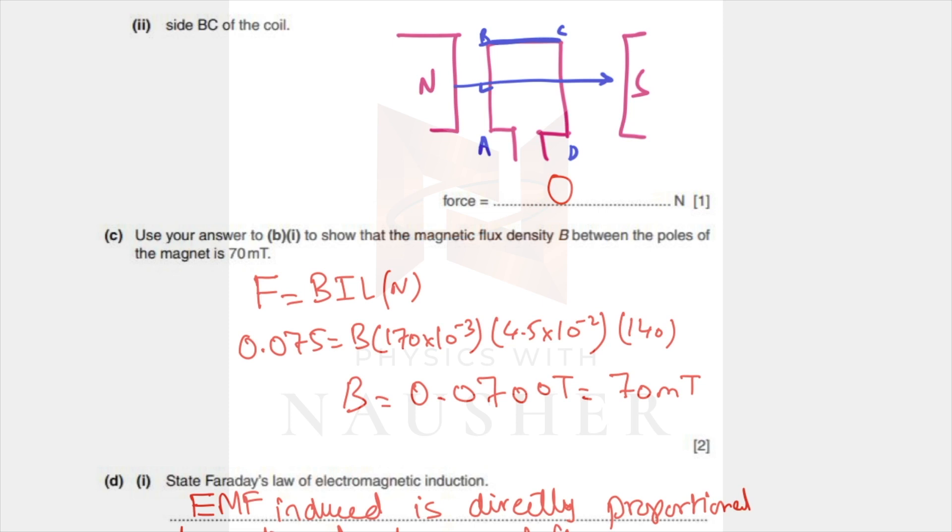Show that the flux density between the poles is 70 milliteslas. Force was 0.075 equals B times I times L times number of turns. Number of turns - I made you underline in the question - because this is not just one coil, there are multiple, in fact there are 140 turns. Force equals B times I times L times n, and from there you get your B as 0.0700, which is 70 milliteslas.